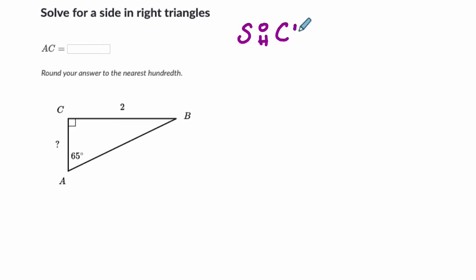Sine is opposite over hypotenuse. Cosine is adjacent over hypotenuse. And tangent is opposite over adjacent. And I'm going to solve for AC. So where is AC? Here's AC. It's this side right here.